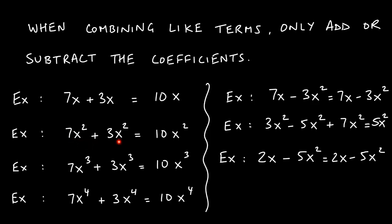If we have 7x squared plus 3x squared, we have like terms, so we add 3 and 7 to get 10, and then x squared comes along. The same pattern holds with x cubed and x to the fourth — only the coefficient changes. And subtraction works the same way: 7x minus 3x squared just stays as it is because these are not like terms. For 3x squared minus 5x squared plus 7x squared, we do have like terms, so 3 minus 5 is negative 2, plus 7 gives us 5, and the answer is 5x squared.